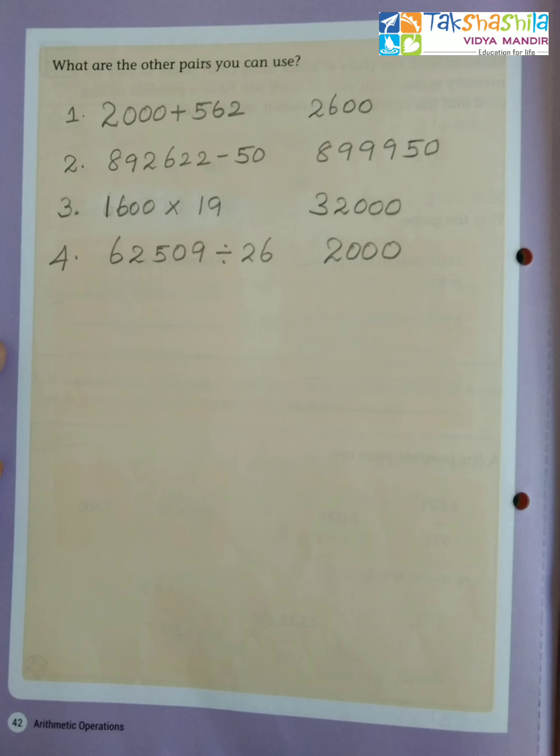Before proceeding to the video, just move on to page number 42. Here I have taken four possible pairs which I am going to use in this game. You can prepare any pairs you wish. See the first pair: 2000 plus 562, which gives 2600. If I round off 2000 I'll be getting 2000, and if I round off 562 I'll be getting 600. By adding 2000 and 600, I'll be getting 2600.